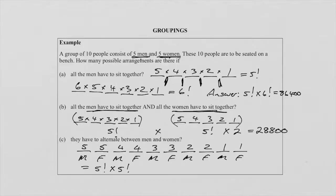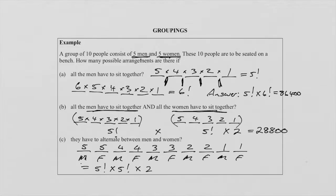Many people see 5! × 5! as the final answer — but that is not the case. The catch is that we started with a male, but they didn't say the first position must be male. We can switch and start with a female, giving exactly the same structure. So we must multiply by 2, giving a final answer of 5! × 5! × 2 = 28,800.